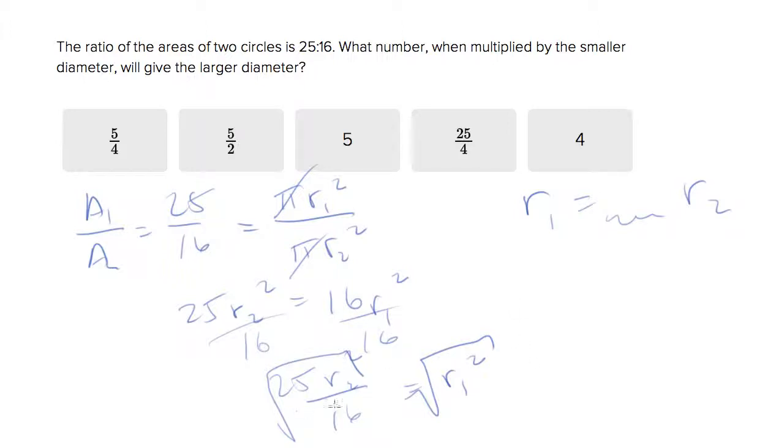And we have nothing but perfect squares inside there, which is nice of them. So what you end up with is five r two over four equals r one. So if you want to put that in the form that they're looking for, well, you already kind of did, but let's just get right up next to it. You get r one equals five fourths r two. So that's your answer.